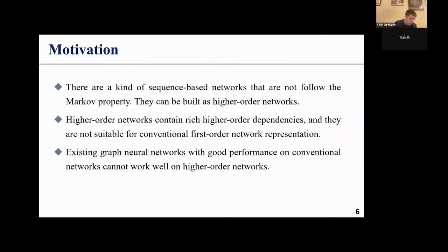So, aiming at the above introduction, we know that there are a kind of sequence-based networks that are not following the Markov property. They can be built as higher-order networks. Higher-order networks contain rich higher-order dependency, and they are not suitable for conventional first-order network representation. Existing graph neural networks with good performance on conventional networks cannot work well on higher-order networks.